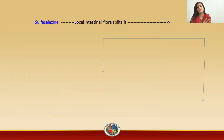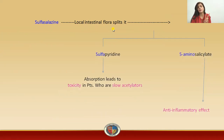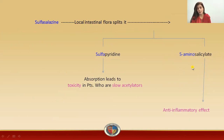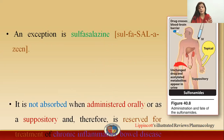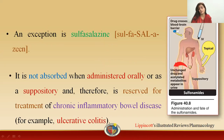Your local intestinal flora or bacteria will split or convert the drug into two different components: sulfapyridine and 5-aminosalicylate. This 5-aminosalicylate is a beneficial metabolite that is responsible for the anti-inflammatory effect, which is why sulfasalazine can be used for the treatment of ulcerative colitis.